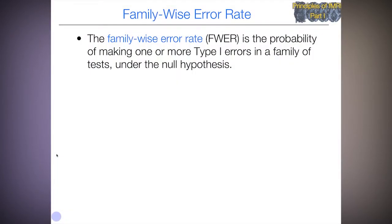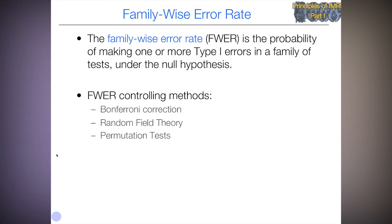The family-wise error rate is the probability of making one or more type 1 errors in the family of tests under the null hypothesis. A type 1 error is when we reject the null hypothesis when we really shouldn't have. There are a number of family-wise error rate controlling methods used in neuroimaging, including the classic Bonferroni correction, random field theory, and permutation tests.